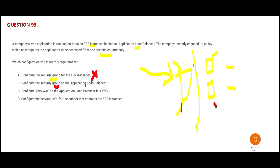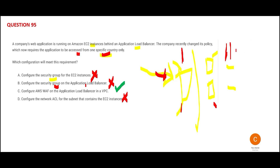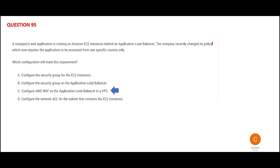Here, we do not want to block a country — the question says only give access to one specific country. So for me, B is wrong and C is correct. Option D is again doing something at the wrong layer. Your answer should act at the entry point where end users come from the country. So C is my final answer.